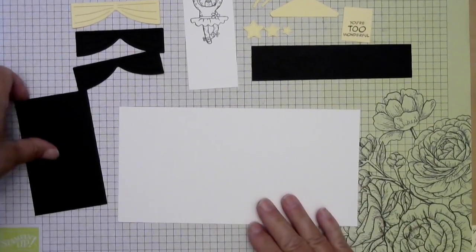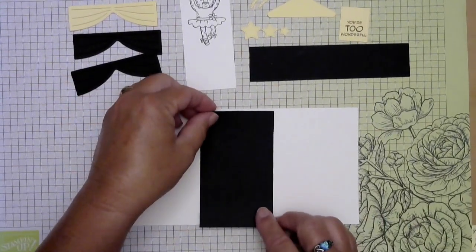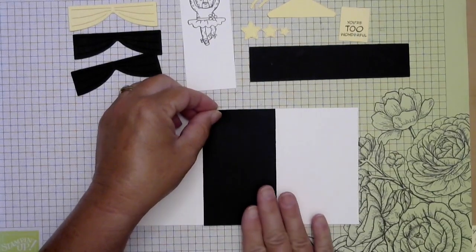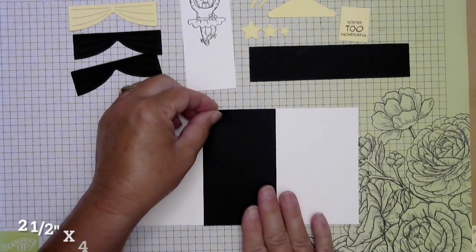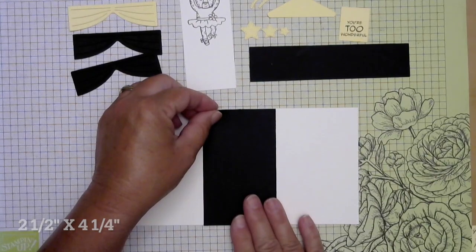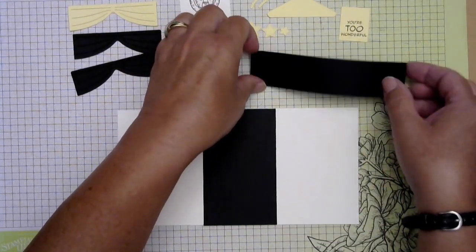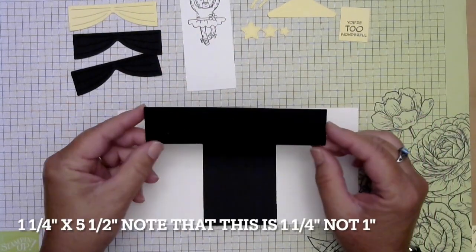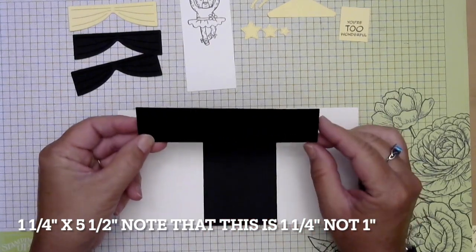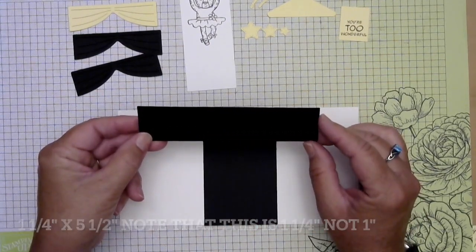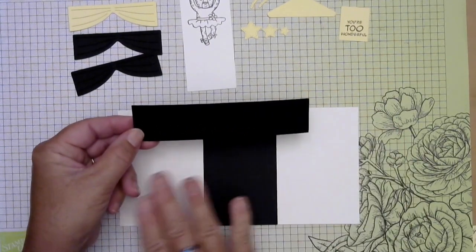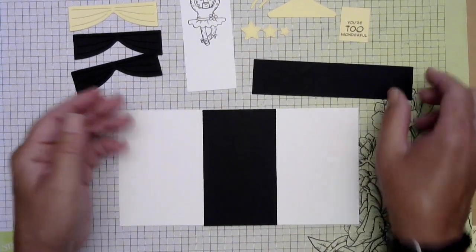Then we have our piece that's going to be our backdrop for our girl and it is two and a half by four and a quarter. We also have our bridge piece. Now this one needs a little extra cutting. It is one inch by five and a half and that's our bridge. It's going to hold our card together.